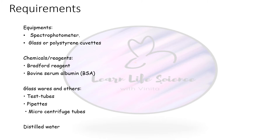The Bradford method is commonly used when extracting protein from plant sources, where interfering compounds are a concern — hence the need for the modified reagent. For the protocol, the equipment required includes a spectrophotometer to measure absorbance, cuvettes, Bradford reagent, and bovine serum albumin (BSA) as the standard protein. Glassware and distilled water are also needed for preparing solutions.